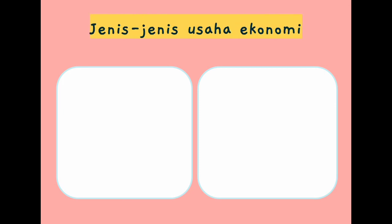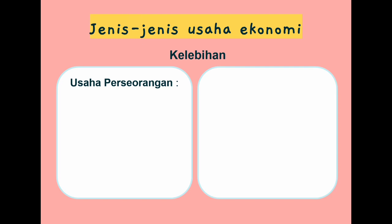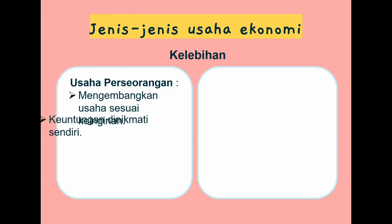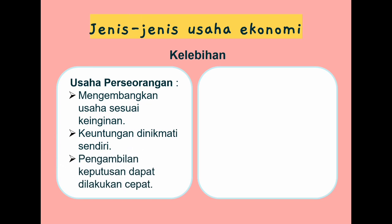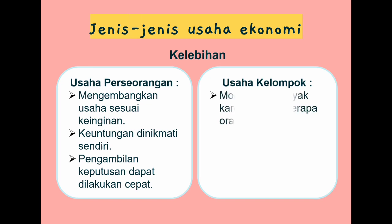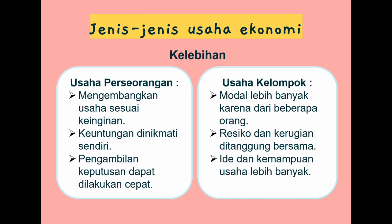Jenis-jenis usaha ekonomi. Berdasarkan cara pengelolaannya, kegiatan ekonomi yang ada di masyarakat dikelompokkan menjadi dua, yaitu usaha perseorangan dan kelompok. Kelebihan dari usaha perseorangan antara lain: mengembangkan usaha sesuai keinginan, keuntungan bisa dinikmati sendiri, dan pengambilan keputusan dapat dilakukan dengan cepat. Kelebihan dari usaha kelompok antara lain: modal lebih banyak karena dari beberapa orang, risiko dan kerugian ditanggung bersama, serta ide dan kemampuan usaha lebih banyak.